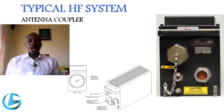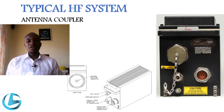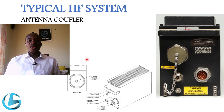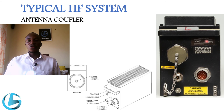The antenna coupler adjusts the impedance of the antenna to match the load of the transmitter. It is installed on most aircraft near the stabilizer. As you can see in this diagram, this is how the antenna coupler looks — it has two connections that go to the transceiver on the front face, and one connection on the rear face for the coaxial cable that comes from the antenna.